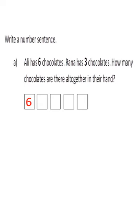Here, in this question, altogether. Altogether means what? Add, addition. That means plus. So, in the first square, we have to write 6. Then write, addition means plus. Altogether means plus.